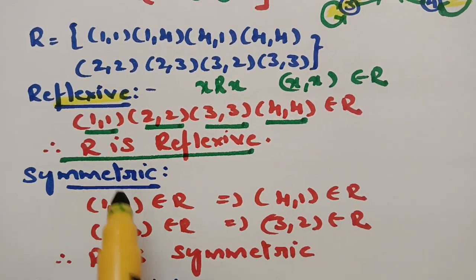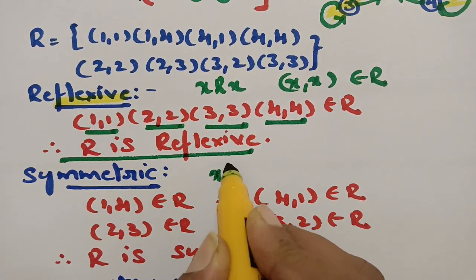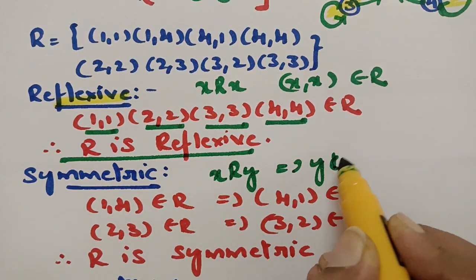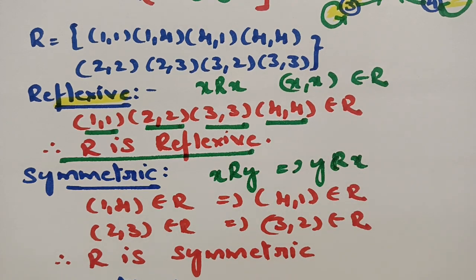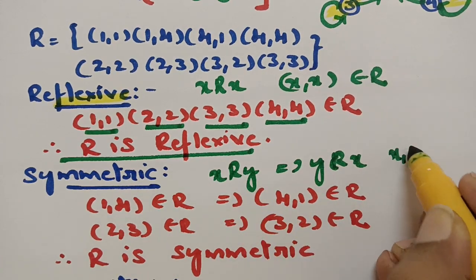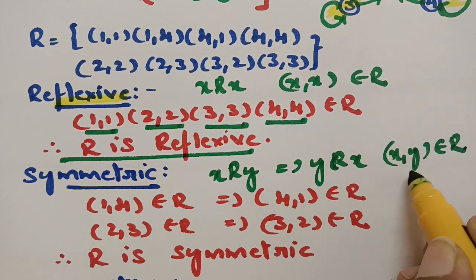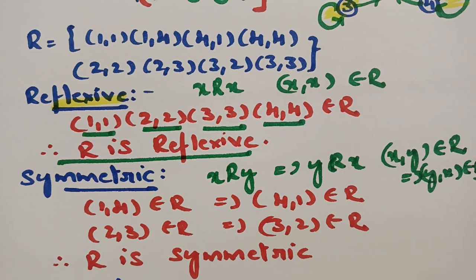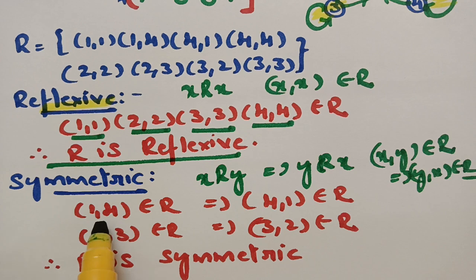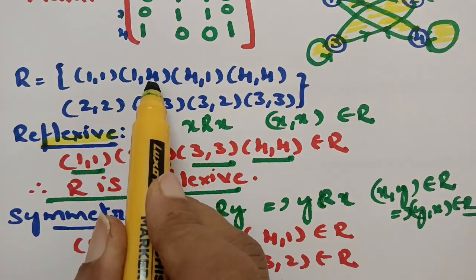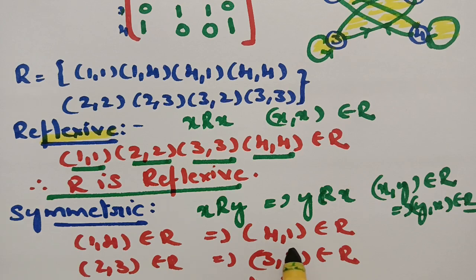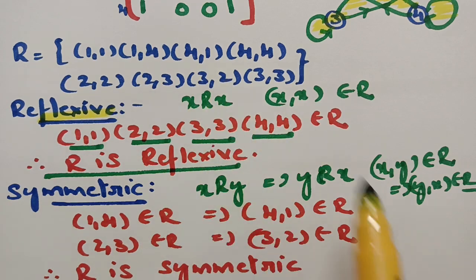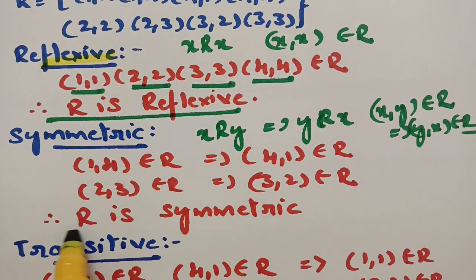Coming to the symmetric property: if x is related to y, then y should also relate with x. In ordered pair notation, if (x, y) belongs to R, then (y, x) also belongs to R. If you take (1,4) from this set, then (4,1) also exists in the relation. And if you take (2,3), then (3,2) also exists in the relation. Therefore, R is symmetric.